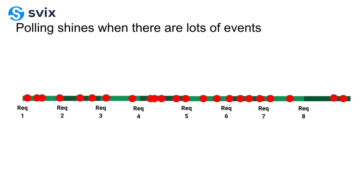Now that makes API polling sound really bad, but there is a specific use case where it can actually be more efficient than webhooks — when you don't care that much about getting updates in real time and you receive a lot of event updates per polling period. You can batch them together, so instead of sending one message for every single update, you can batch 5, 6, 7, or 10 updates together in one message. That's the advantage of API polling.